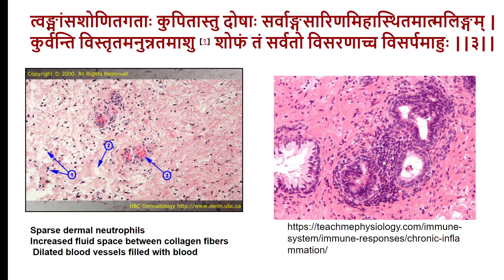We have already discussed part of Visarpa when we covered Vidradi, and referred to the differences between Vidradi, Visarpa, and Vrana-sopha. Specifically in Visarpa, the superficial tissues — Tokamamsa, meaning skin and subcutaneous tissues — are involved. The condition tends to spread throughout the body (Sarvantha Sarinam), and the lesion is flat (Anunnatam), not raised, spreading horizontally rather than vertically. This is what defines Visarpa.